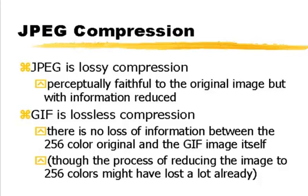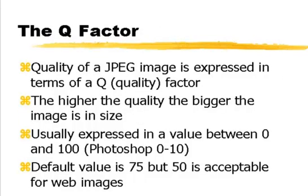GIF, on the other hand, is lossless compression — there is no loss of information between the original and the GIF image. We can take a GIF image and after compression work out what the original looks like. With JPEG you cannot, because after it's done its work the information is lost. That's the major difference.